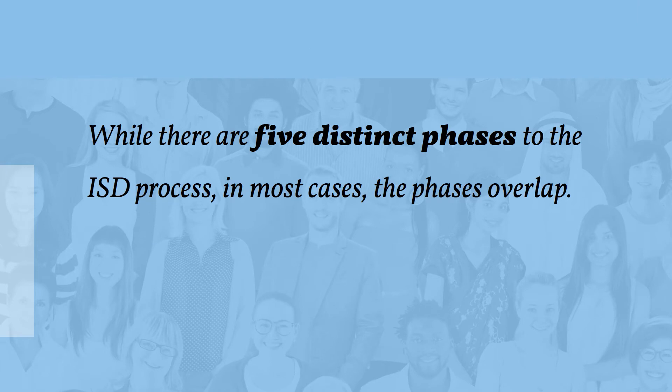While there are five distinct phases of the ISD process, in most cases the phases overlap. Although the process appears to be linear, it's actually iterative. It is common to recycle back to an earlier phase when information is uncovered at later stages.